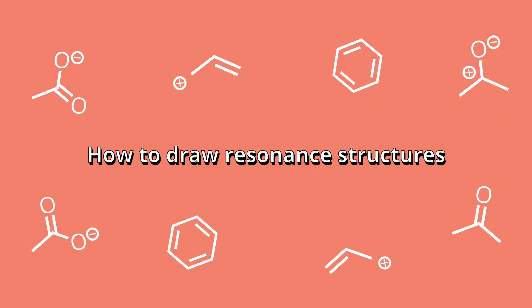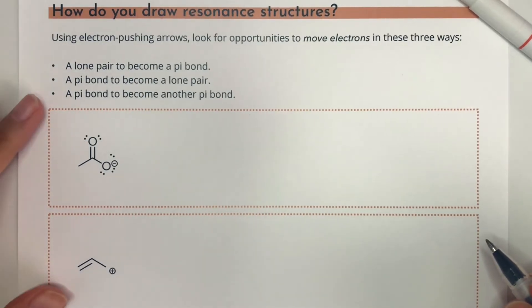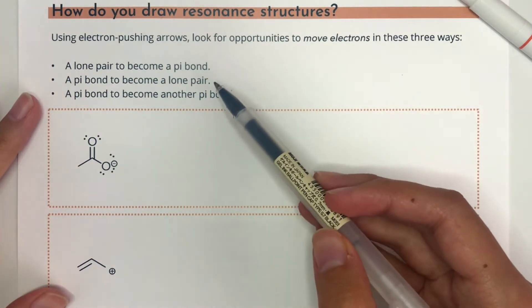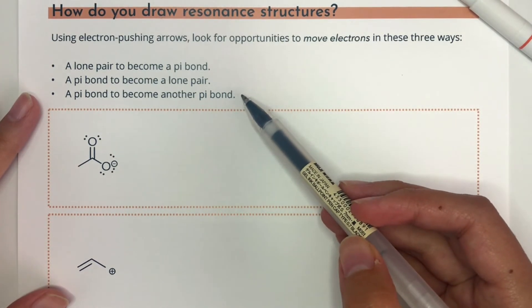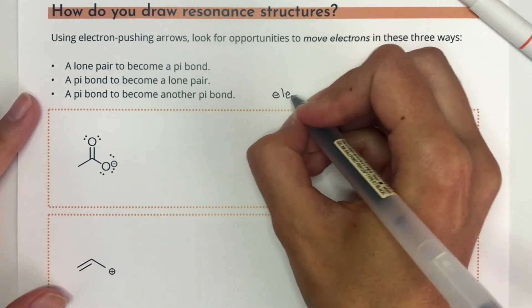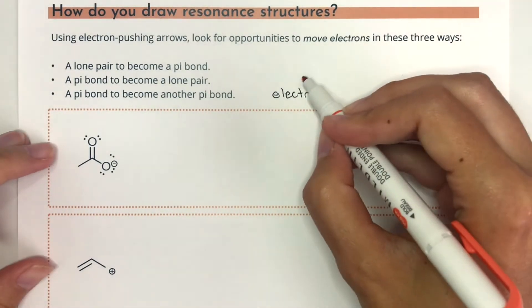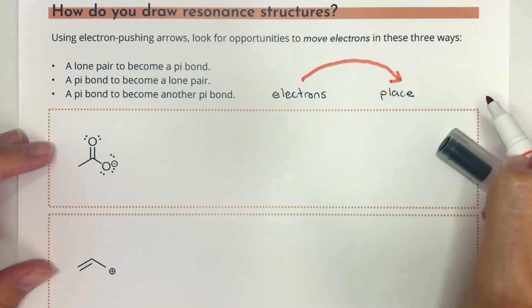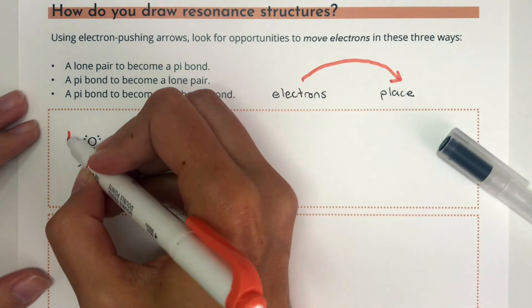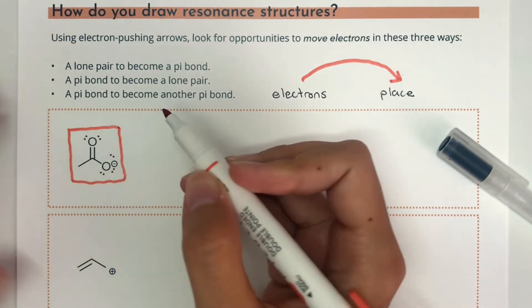In order to become skilled at recognizing delocalized electrons and drawing resonance structures, we first need to be able to take our drawings and push electrons around using arrows, just like I did in the previous example. We're going to be looking for three specific ways we can move pairs of electrons around: a lone pair to a pi bond, a pi bond to a lone pair, or a pi bond to become another pi bond. It's important to remember that the arrow always goes from a pair of electrons — either in a bond or a lone pair — to the place where you want them to go.